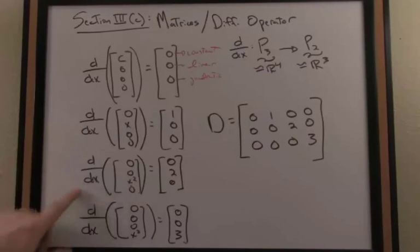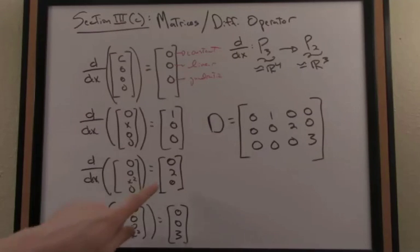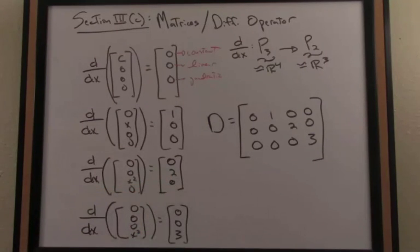Similarly, if I take the derivative of the x² function, well, x², the derivative of x² by the power rule results in 2x, so therefore I've placed a 2 coefficient in the linear slot. Similarly, when I take the derivative of x³, the derivative of x³, of course, is 3x², so I place the coefficient 3 in the x² slot.